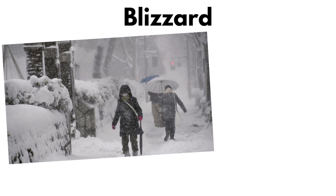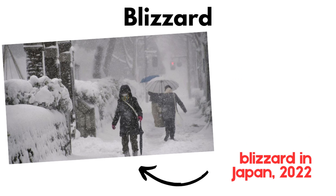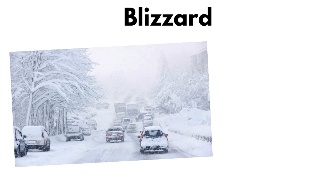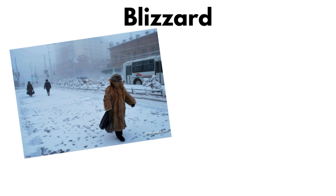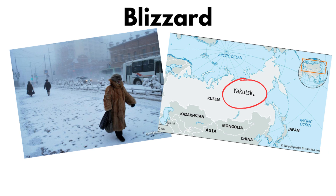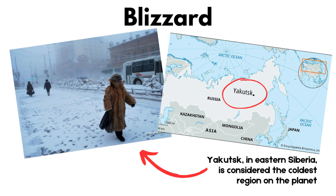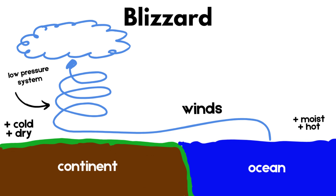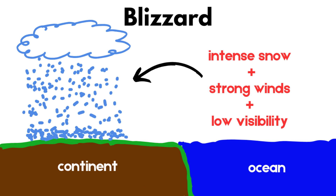Blizzard, also known as a snowstorm, is a meteorological phenomenon characterized by extreme weather conditions associated with heavy snowfall, strong winds, and low visibility. It typically occurs in cold regions, mainly during winter, when there is sufficient moisture and temperatures below freezing for precipitation to turn into snow. Blizzards are often caused by low-pressure systems that bring cold, moist air from the ocean to colder continental areas, resulting in the formation of storm clouds that produce heavy snow. Snow can fall rapidly and accumulate in large quantities over a short period of time. Blizzards are also characterized by strong winds that blow the accumulated snow, further reducing visibility and creating an even colder sensation.